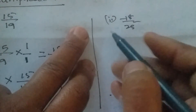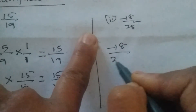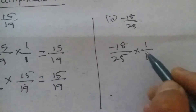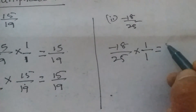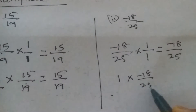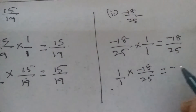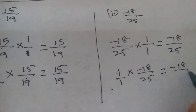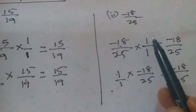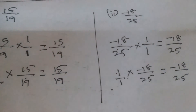For −18/25 × 1: write 1 as 1/1. One negative sign, so 18 × 1 = 18 and 25 × 1 = 25, giving −18/25. Also 1 × (−18/25) = 1/1 × (−18/25): plus × minus gives one negative sign, 1 × 18 = 18 and 1 × 25 = 25, giving −18/25. We get the same number as the answer. Identity property is true for multiplication.